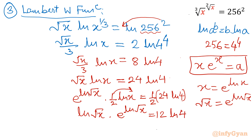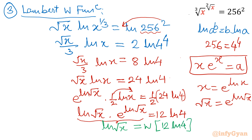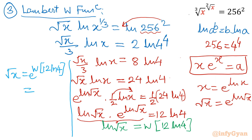Now the left hand side is in the form required to apply the Lambert W function. So it will give us ln root x on the right side equal to W of 12 ln 4. Now I will write in exponent form: root x will be equal to e raised to the power Lambert W function of 12 ln 4. If you calculate this value, it comes out to 8. So root x equals 8, and squaring both sides, x equals 64.